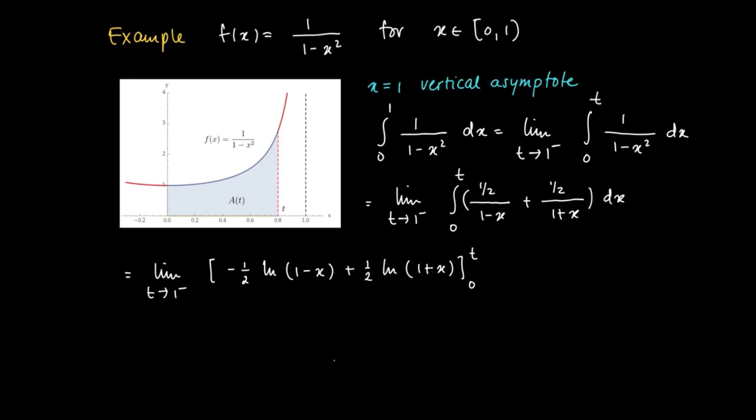We consider these primitives between the integration bounds 0 and t, so we get the limit as t approaches 1⁻. We can write the difference of logarithms differently, since we know that this equals 1/2 · ln((1+x)/(1-x)).